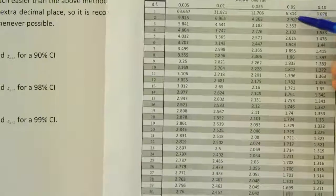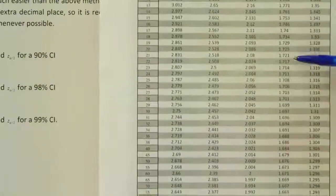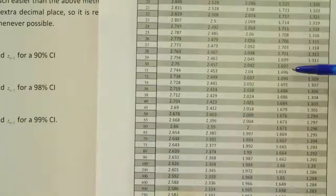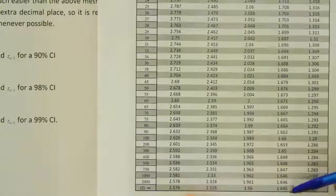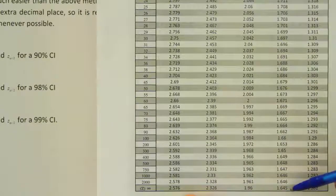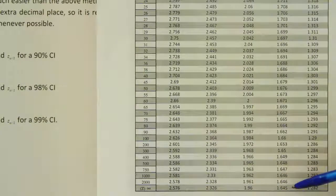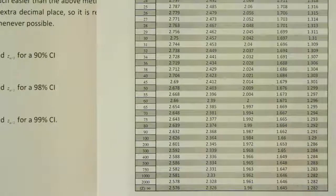So I'm going to just move this table up until we see the last row of the table. And there it is. The very last row says that the number is 1.645.